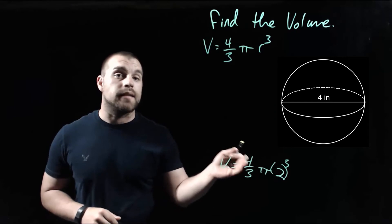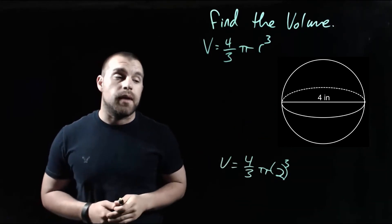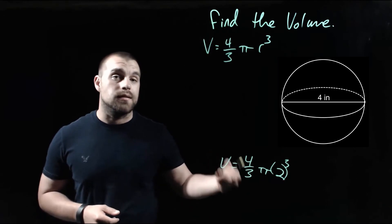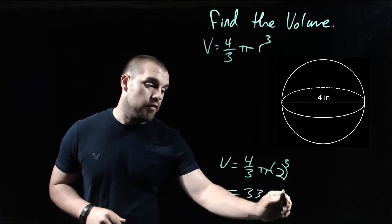So we take 4 thirds times pi times 2 cubed. 2 cubed is 8. And then I would just type this into my calculator. 4 thirds times pi times 8. When we do that, we get about 33.51.